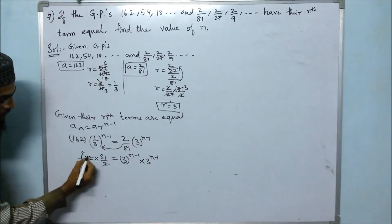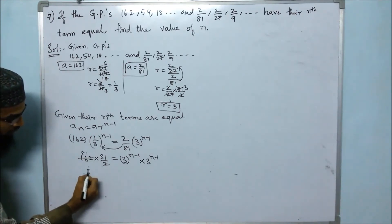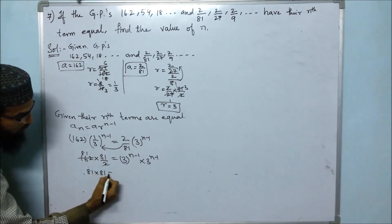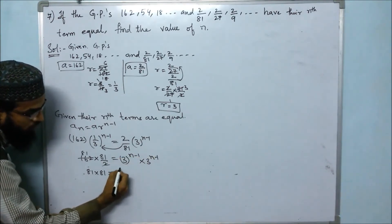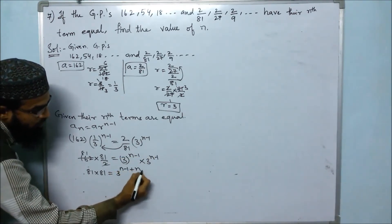Simplifying 162 times 81/2 gives 81 times 81. When bases are the same, powers are added: 3 to the power of n minus 1 times 3 to the power of n minus 1 equals 3 to the power of 2n minus 2.